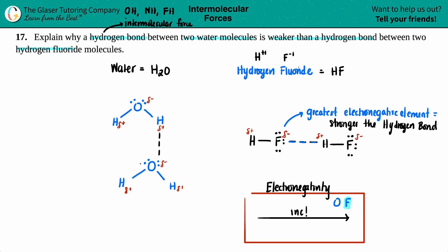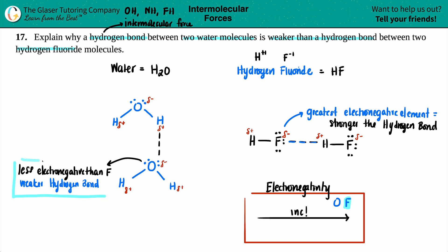Since oxygen is less electronegative than fluorine, it has a weaker hydrogen bond. So oxygen being less electronegative than fluorine means the hydrogen bond in water is weaker. Both explanations are essentially the same answer — one stated in terms of oxygen, one in terms of fluorine.